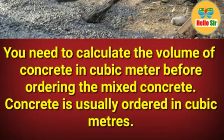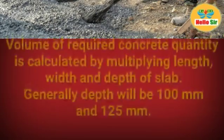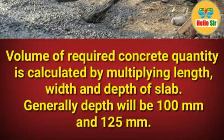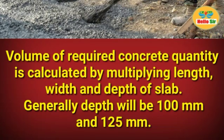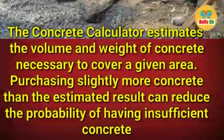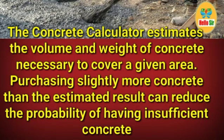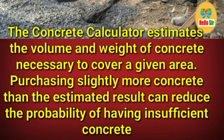You need to calculate the volume of concrete in cubic meters before ordering. Concrete is usually ordered in cubic meters, so the volume of required concrete is calculated by multiplying length, width, and depth of the slab. Generally, depth will be 100mm or 125mm. The concrete calculator estimates the volume and weight of concrete necessary to cover a given area. Purchasing slightly more concrete than the estimated result can reduce the probability of having insufficient concrete.